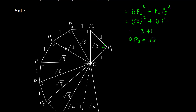Now we use √4 as the base, draw a 1 cm perpendicular from P4, and we get OP5 = √5 from O. Keep doing this to continue building the spiral.